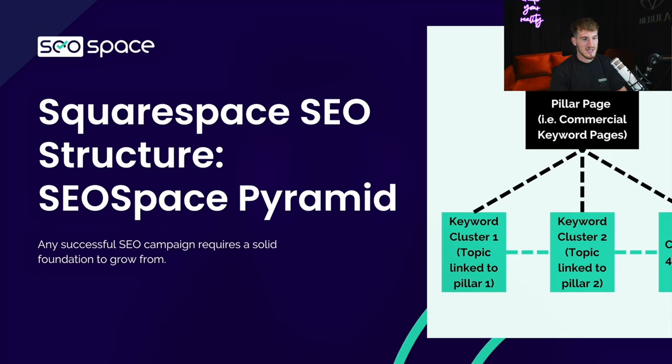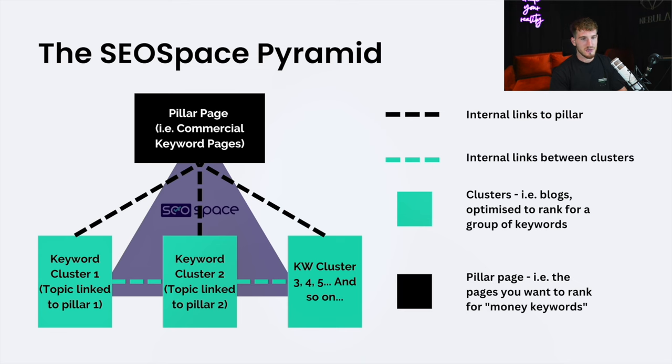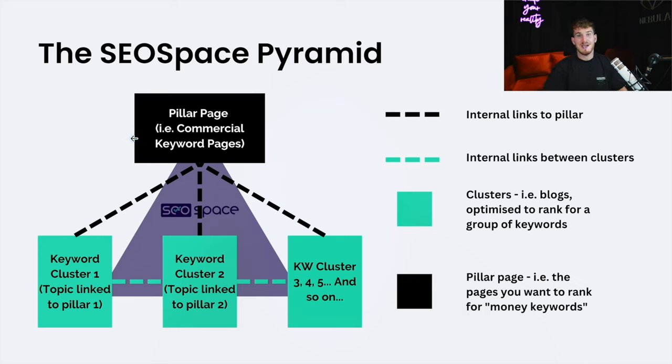I do always try to make these videos jargon free, but if you have any questions feel free to leave them in the comments. Now, at the top of the SEO Space Pyramid you always have your commercial keyword pages, or your pillar pages. These are the pages that you want target customers to come to in order to either buy your product or service — the pages that are actually going to make you money.